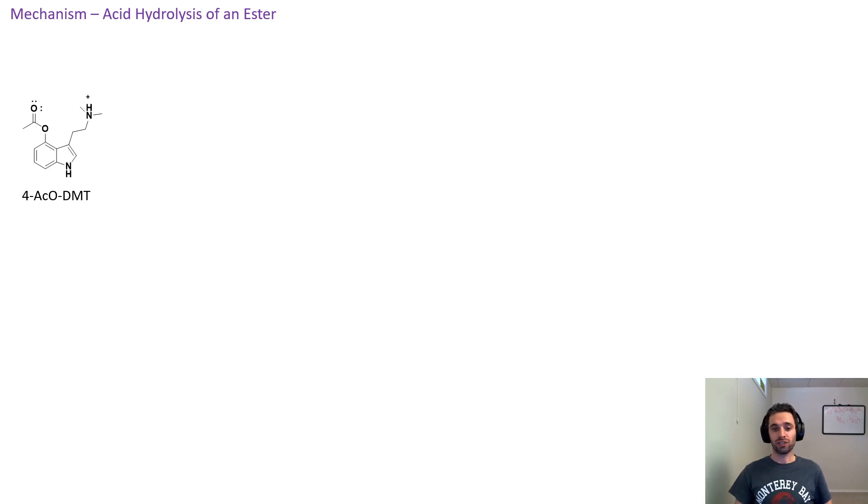The starting material is our 4-AcO-DMT and our reagent is acid or H3O+. Electrons in the carbonyl pick up a hydrogen on the H3O+, which will deprotonate it. This forces the electrons onto the oxygen, taking away the positive charge, giving us our intermediate with the positively charged oxygen and also water.